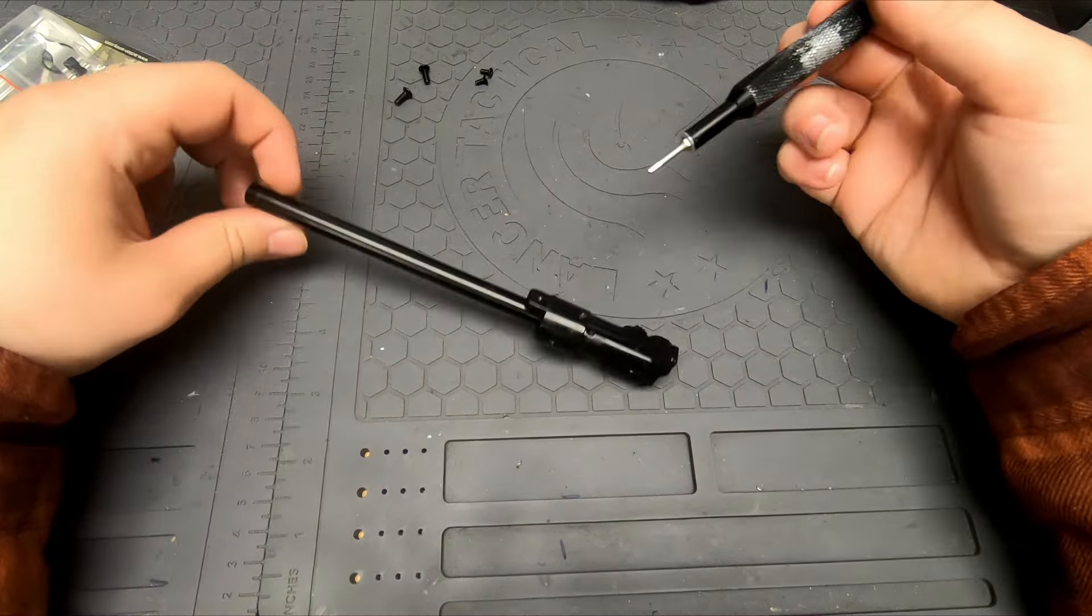This screw down here, you have to line up these hop-up wheels so that way you can fit your driver in down there. Alright, so you can go ahead and unscrew these. If you have an AAP-01, there's going to be one piece in here that you don't have. The Lancer Tactical comes with an upgraded I-key, but the AAP-01 doesn't have that. So if you see an extra piece in mine, don't worry about that.